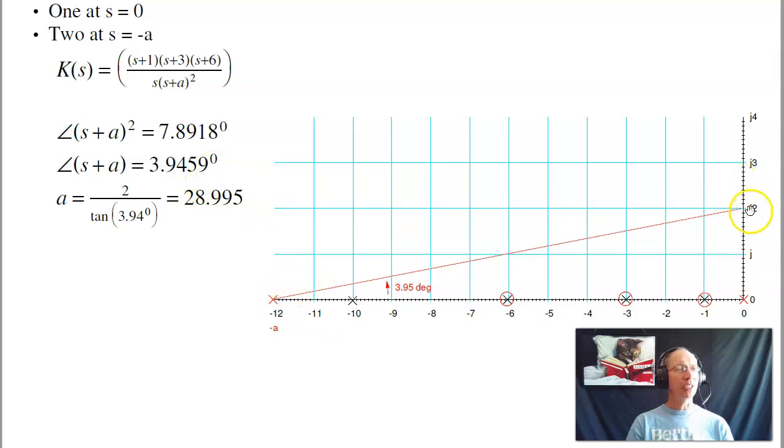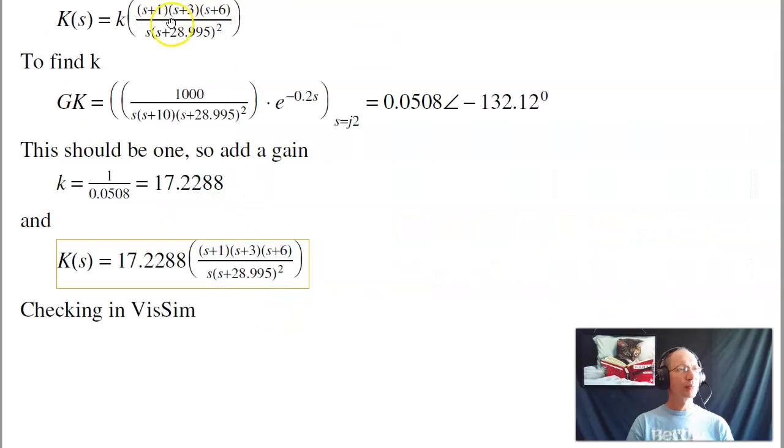So I put the pole right here. Opposite over adjacent is tangent. The real part needs to be at 28.995. So here's k of s. To find the gain k, I analyze that s equals j2, and I get the correct phase margin. Gain's wrong though. To fix the gain, add k to make the gain 1 at 2 radians per second, so k is 17.22. And there's my compensator.